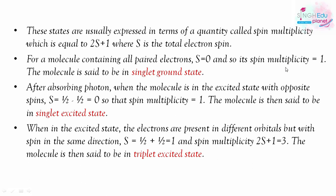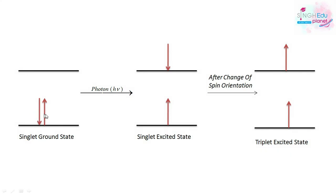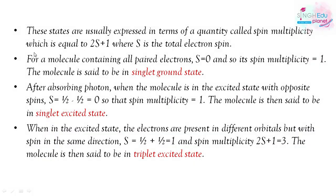We represent these states using a quantity called spin multiplicity, which is 2S+1, where S is the total electron spin. For a molecule with all paired electrons, S = 0, so spin multiplicity = 2(0)+1 = 1. This molecule is called the singlet ground state. In this state the two electrons have opposite spins: +½ and −½, giving net spin S = 0.